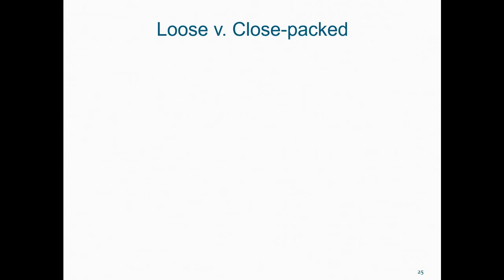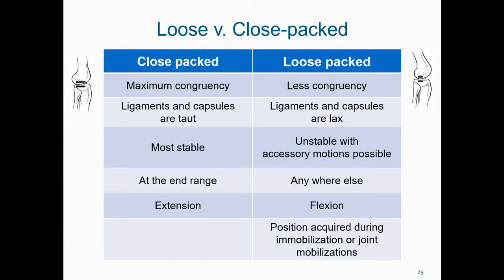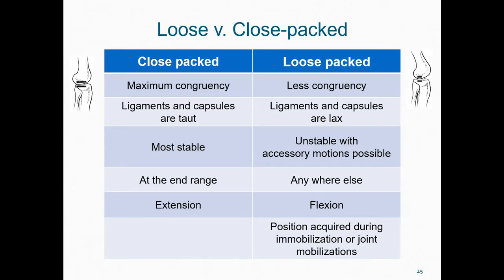Within most joints, the two articular surfaces will fit together best in one particular position. This gives rise to the distinction between close-packed positions and loose-packed positions. In a close-packed position, there is maximal joint congruency — the articular surfaces fit together better. Joint ligaments and joint capsules are more taut, and the joint is at its most stable, with only minimal accessory motions being possible. The major joints tend to be more close-packed when positioned towards the end of their range of motion and when in extension. A loose-packed position is typically acquired during joint immobilisations or joint mobilisations in the clinic.